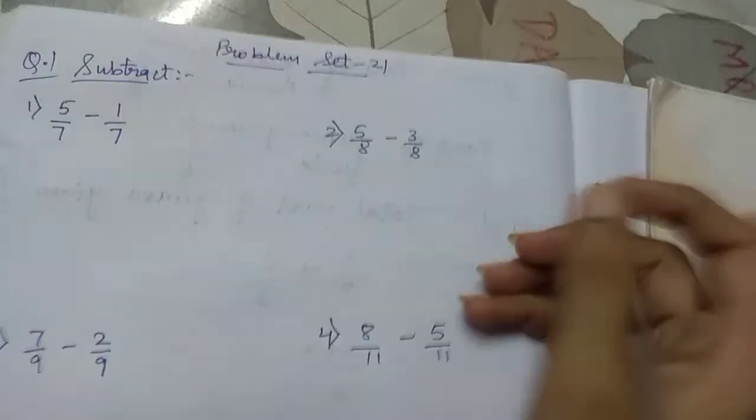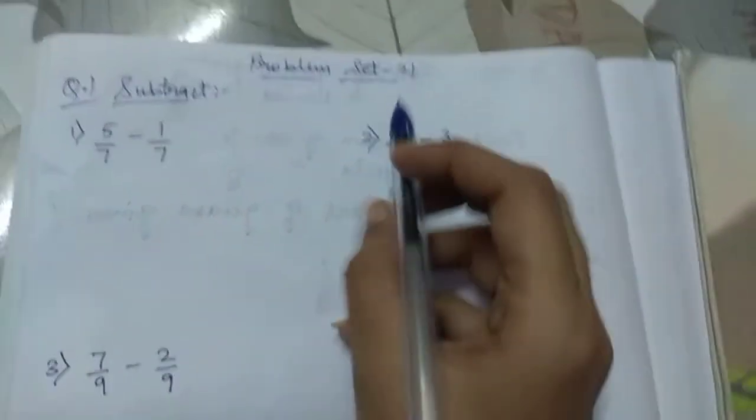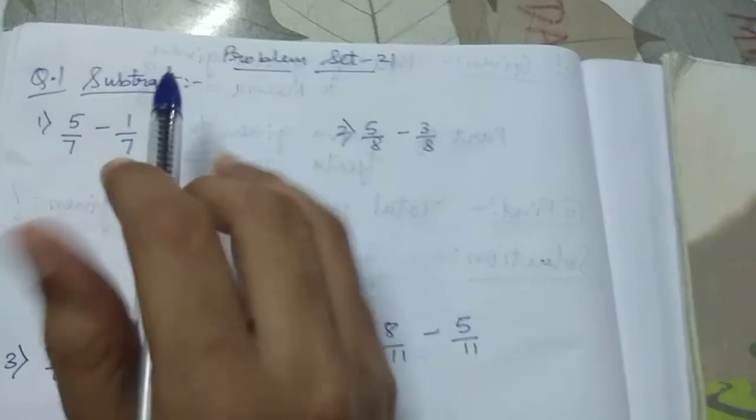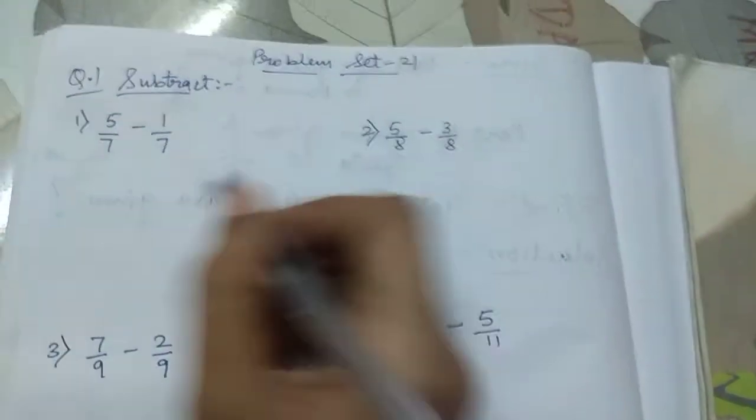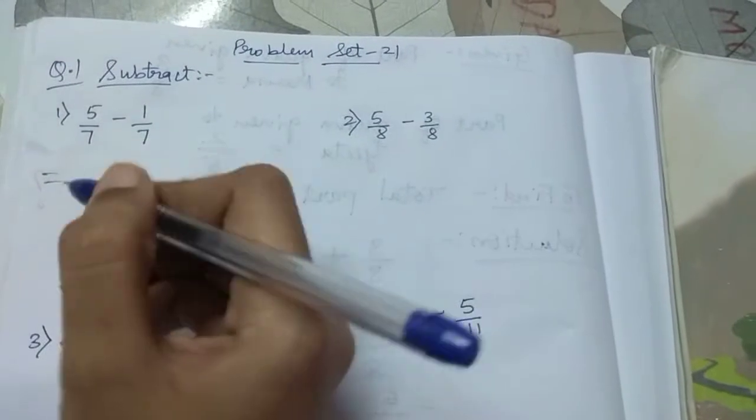Now problem set 21 is same like problem set 20. It's just that instead of addition, we have to carry out subtraction and we have to look for the same denominator.